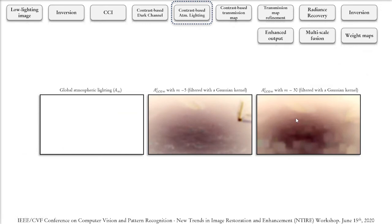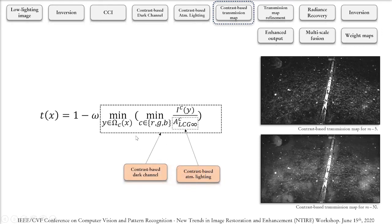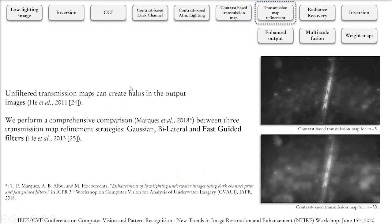The contrast based transmission map can be calculated by first normalizing each color channel of the image by the recently calculated models of atmospheric lighting. Then a process similar to the dark channel creation is going to look for the pixel with lowest intensity considering all these normalized color channels. Given that unfiltered transmission maps can create halos in the output images we refine our transmission maps with a fast guided filter. The choice of a fast guided filter is based on a work that we published in 2018 which compared the use of Gaussian filters, bilateral filters, and fast guided filters.